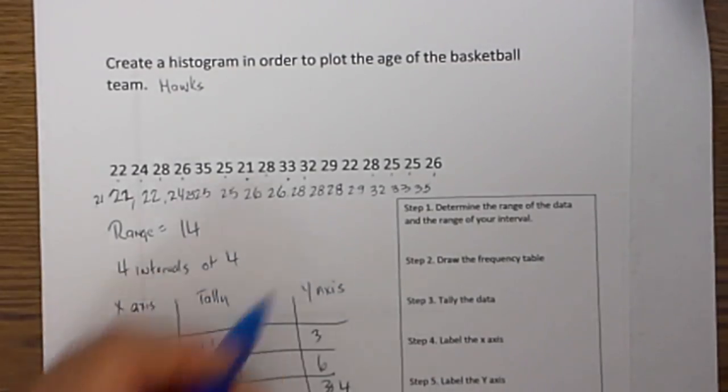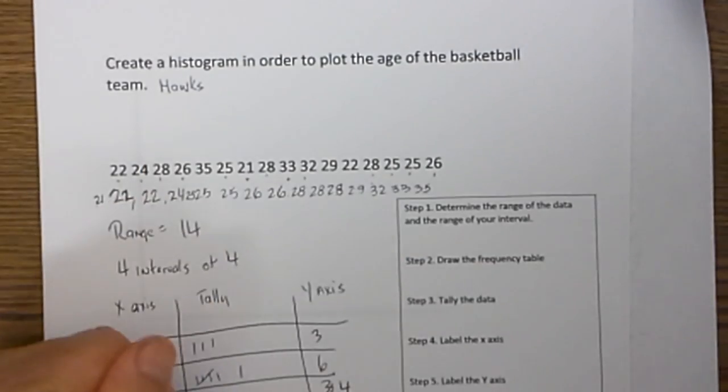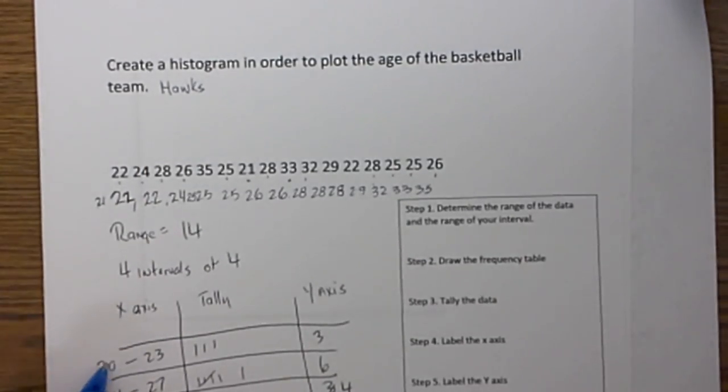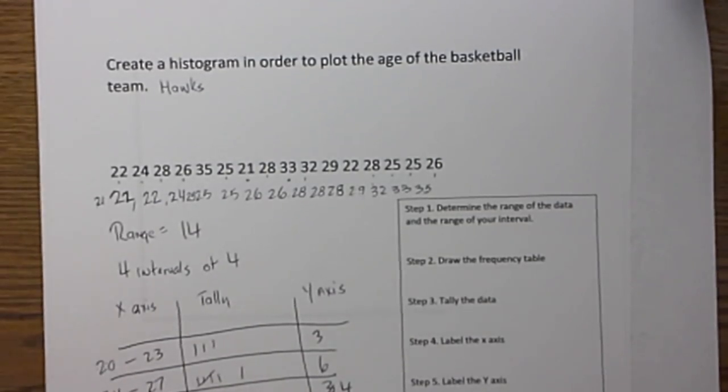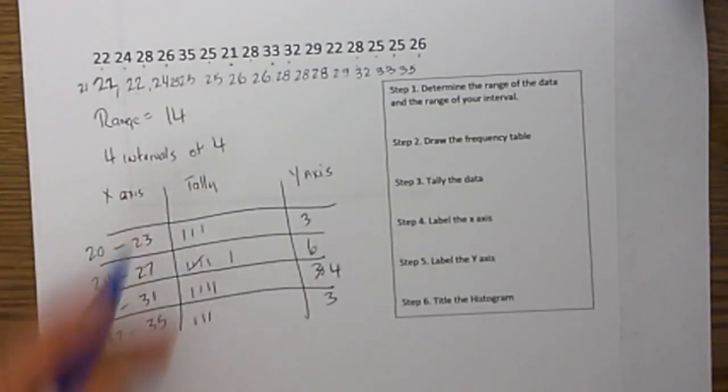And finally 32 through 35, I go 1, 2, 3. So now we have x axis, we have our intervals, we also have our tally, and then the y axis.